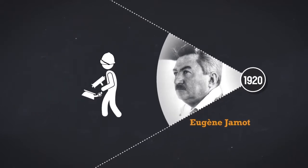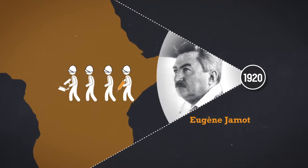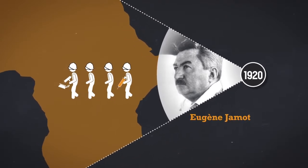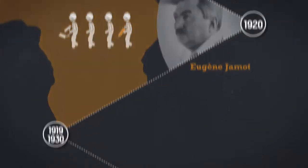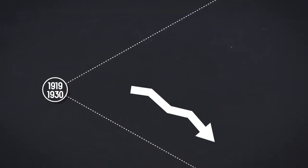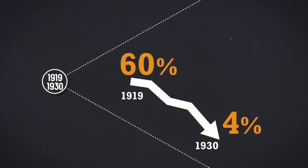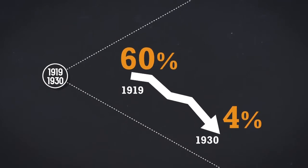Armed with microscopes, he and his mobile teams traveled to the remotest of regions, seeking out patients they then treated with arsenic derivatives. In Cameroon, between 1919 and 1930, Jameau's doctrine brought down prevalence, meaning the percentage of the population with the disease, from 60% to 4%.